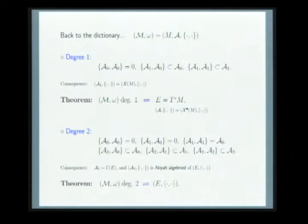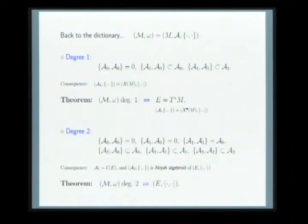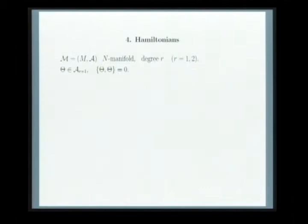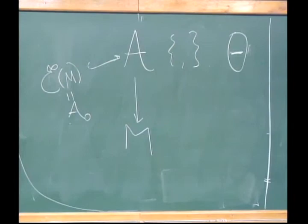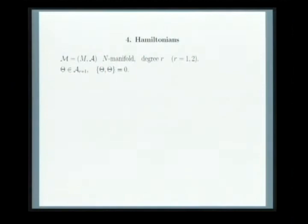The magic thing in degree two: you know that a symplectic degree-two manifold is given by a vector bundle with a pairing. If you take a degree-three function that brackets itself to be zero, what you get is a Courant structure as described before. All the axioms from before become only one equation — one integrability equation. The upshot is that this dictionary provides a hierarchy of symplectic N-manifolds: the hierarchy goes by the degree of the manifold, equipped with an integrable Hamiltonian. In degree zero: ordinary symplectic manifolds. In degree one: Poisson manifolds. In degree two: Courant algebroids.